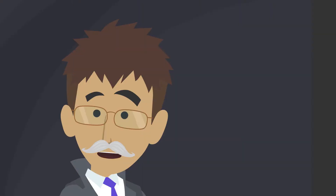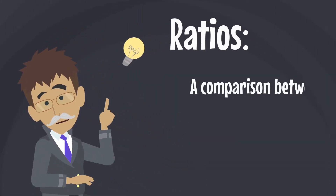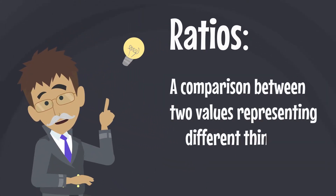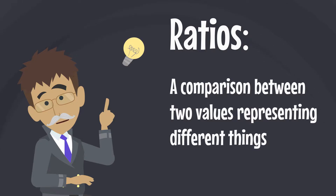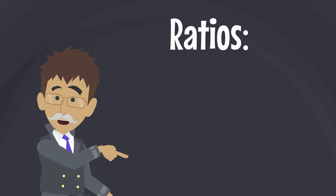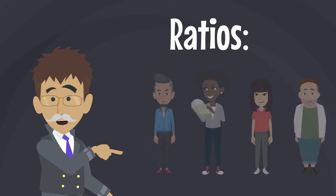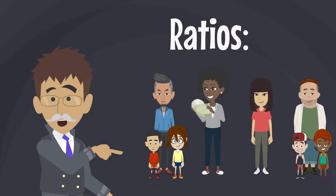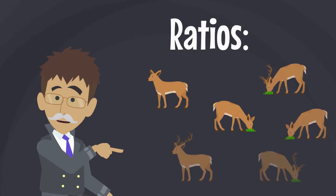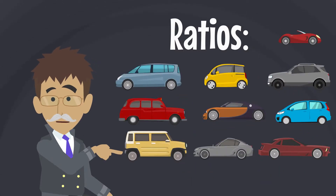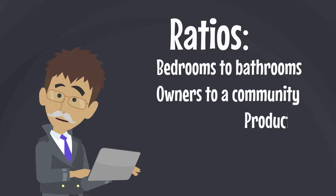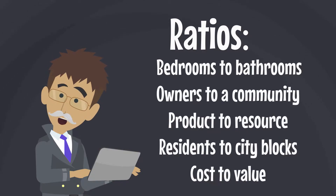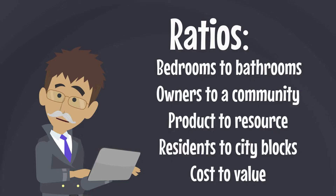A ratio is a comparison between two values representing different things. For example, a ratio could compare the number of parents in a group to the total number of people, the number of males to females, or the number of tires to a vehicle. Because ratios are a comparison and we love to compare things, ratios are super common in the world.